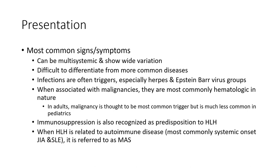Most common signs and symptoms can be multisystemic, showing a wide variety and making it difficult to differentiate from more common diseases. Infections are often triggers, especially in the pediatric age group. When associated with malignancy, they are most commonly hematologic in nature. Malignancy is thought to be a common trigger. Immunosuppression is also recognized as a predisposition to HLH. When HLH is related to autoimmune disease, most commonly systemic onset juvenile idiopathic arthritis and SLE, it is referred to as macrophage activation syndrome (MAS).